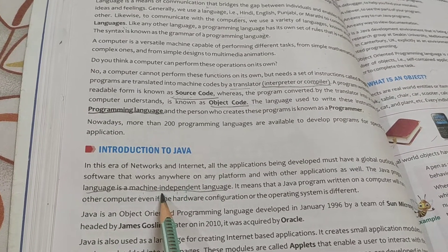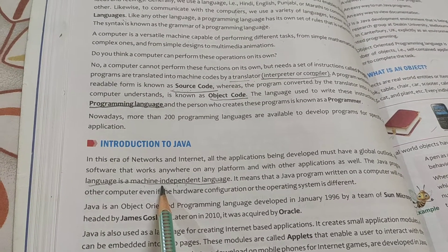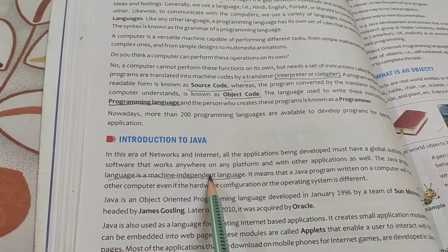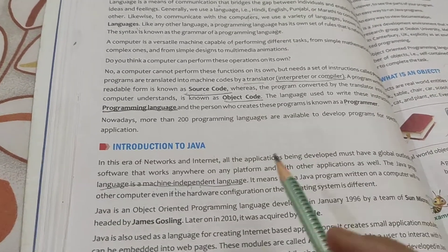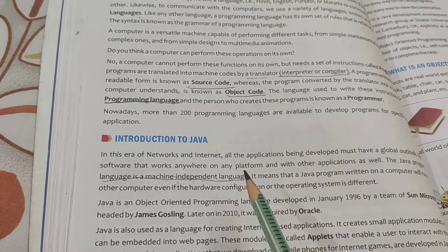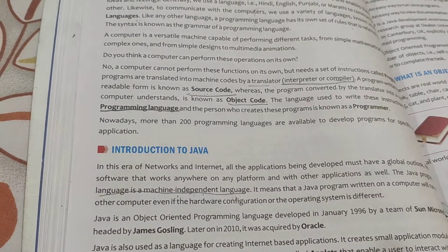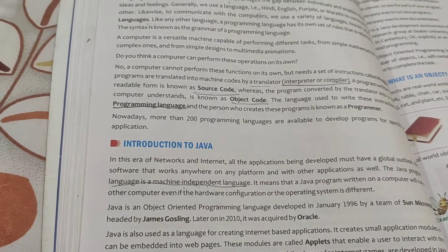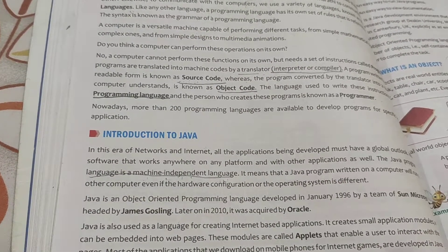What is machine independent? Previously, whatever languages we had were machine dependent languages. Machine dependent means our machine configuration — what is the processor, RAM, operating system — the program was dependent on all of these. If we have a different platform, then the program will not run, so it becomes very complicated. We cannot take our computer everywhere, and at that time we didn't have laptops and tablets.